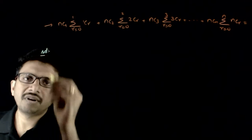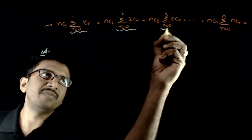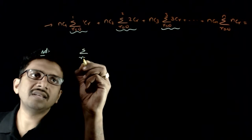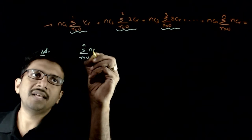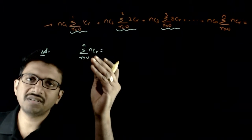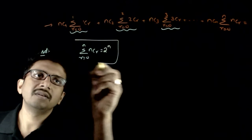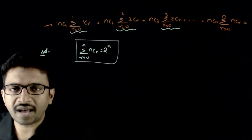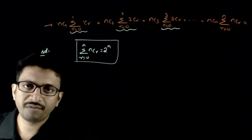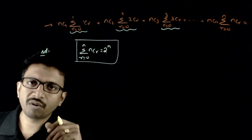This is a very straightforward question based on your knowledge of simplification. We know that sigma(r=0 to n) NCr, which is NC0 plus NC1 plus NC2 up to NCn, is nothing but 2 power n. This is a straightforward formula from the topic of properties of binomial coefficients regarding the sum of binomial coefficients.